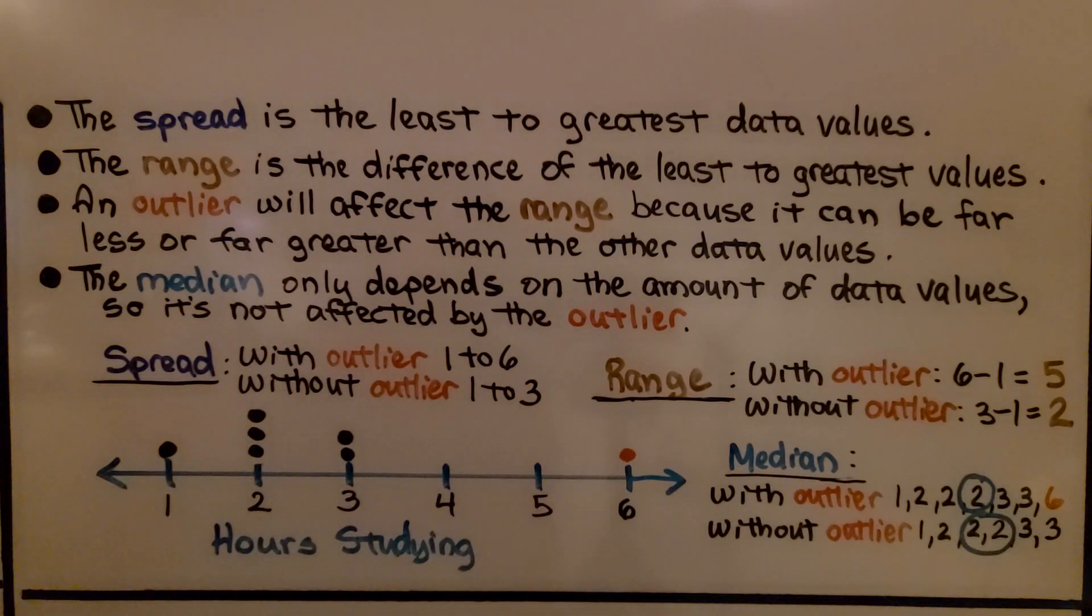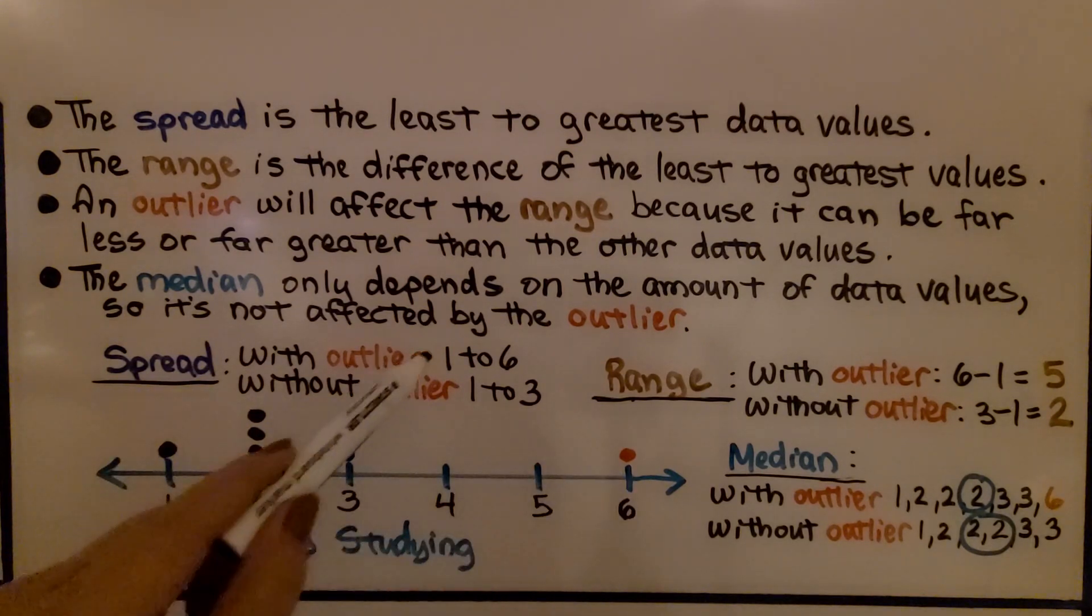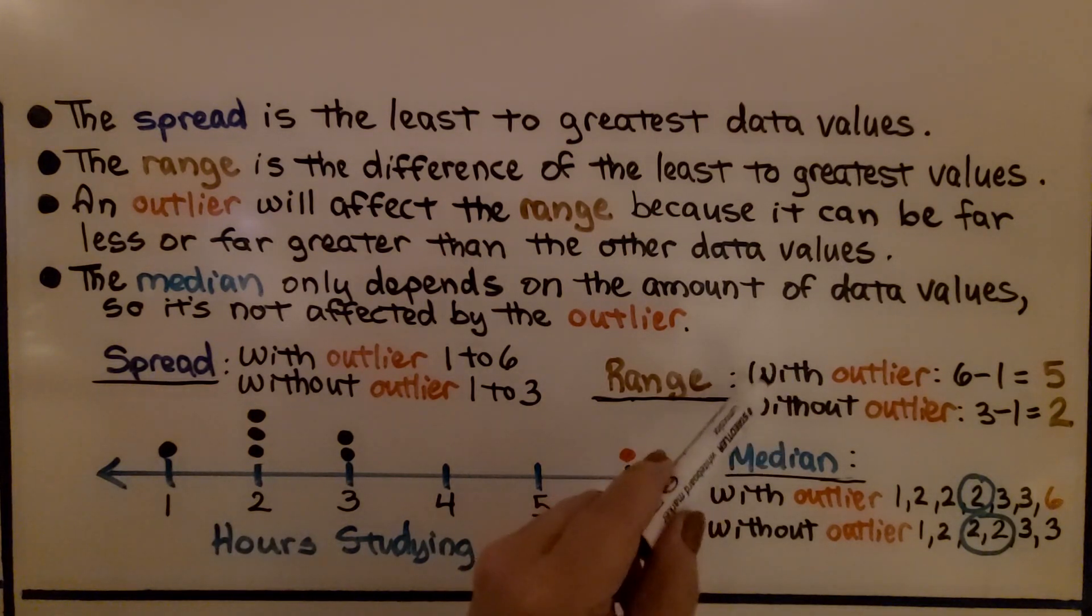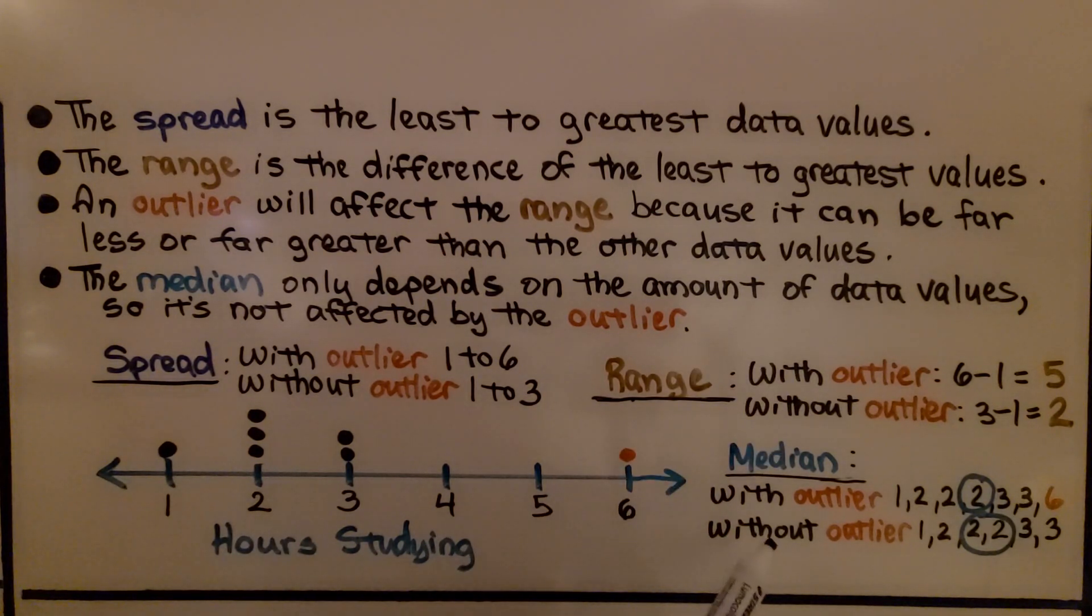For the range with the outlier, we go six minus one. We use the one to six and find the difference. So that would be a range of five. Without the outlier, we have a range of two.